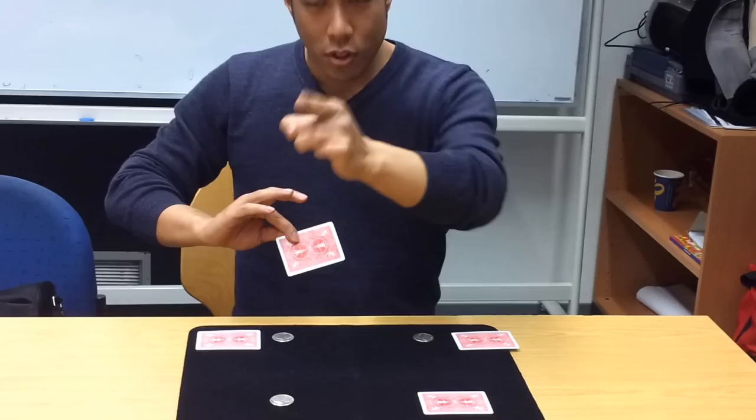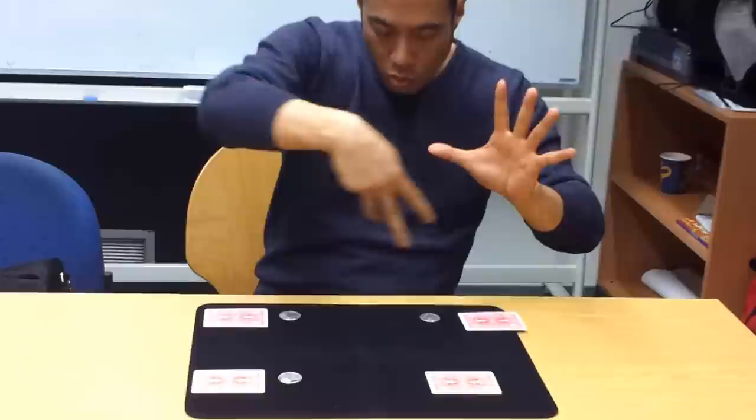No hands, no cards, and I'll even let Stephanie choose the order in which they travel. That's coin one, two, three. Which one goes first? Three.